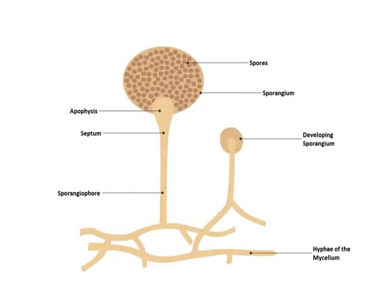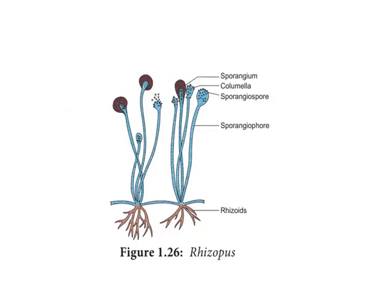Next is the structure of Mucor. As we can observe in the picture, these fungi also contain long filaments which we call hyphae or mycelium. From these long filaments, sporangiophores arise, which end into a septum and apophysis. This gives rise to another structure called the sporangium, and it is this sporangium that bears the spores of Mucor — these spores are called sporangiospores.